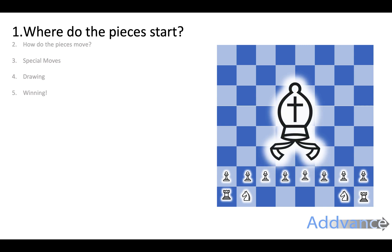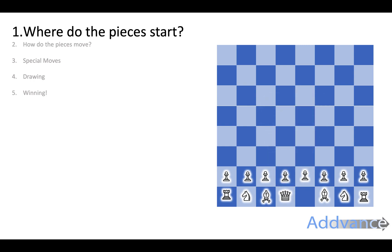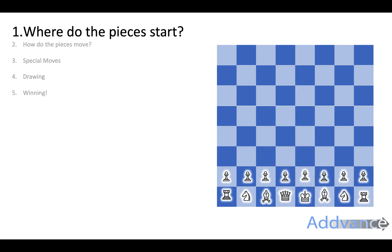The bishop goes on the third square. The queen goes on the square of its own colour — so the white queen goes on the white square, and then the king goes on the square next to the queen. The black pieces are in the same order but in reverse. The black queen goes on the black square on the other side.